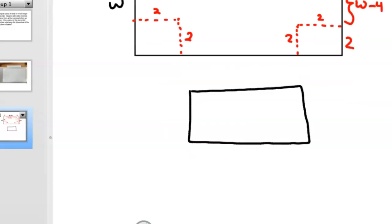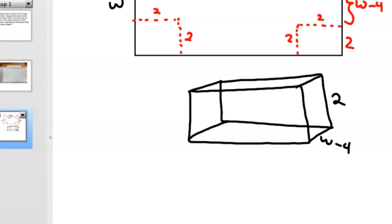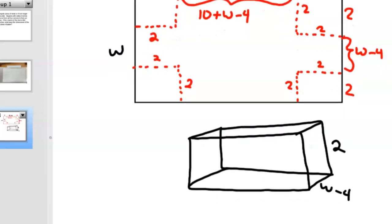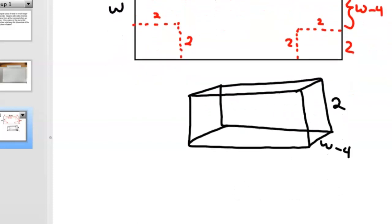So then you fold along the dotted lines, and you create a box. So here's our box. As we fold along the dotted lines, and the height of the box is 2, because that's the corner we cut out. The width is no longer width. It's width minus 4, and the length is 10 plus W minus 4, so W plus 6. So we've got, there's our length, width, and height.